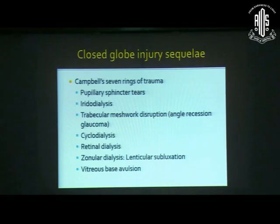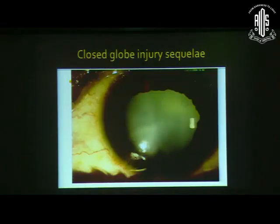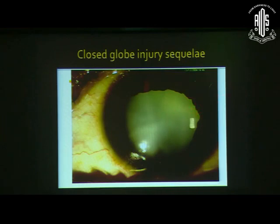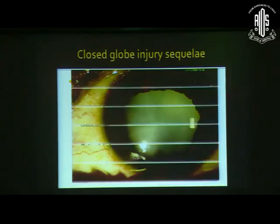Campbell described seven rings of trauma seen after blunt trauma. The first, most anterior one, is pupillary sphincter tears. This image shows multiple pupillary sphincter tears. The clue is the pupil — you may have anisocoria between the two eyes, a ragged margin of the pupil, and it remains in a mid-dilated state after the injury.